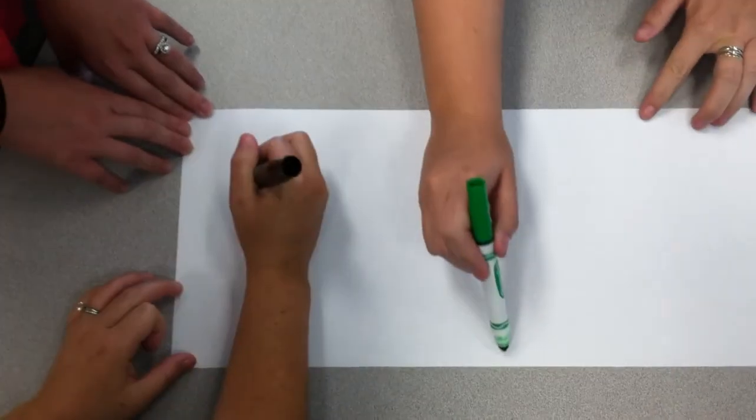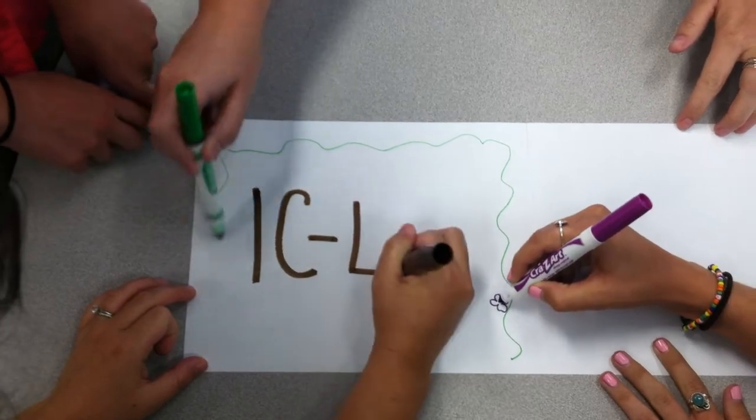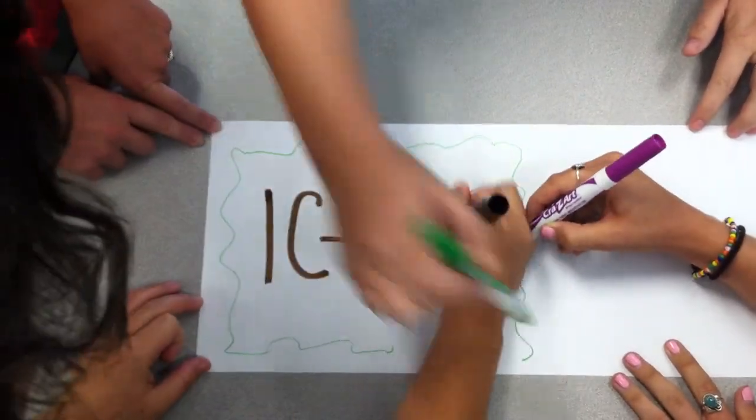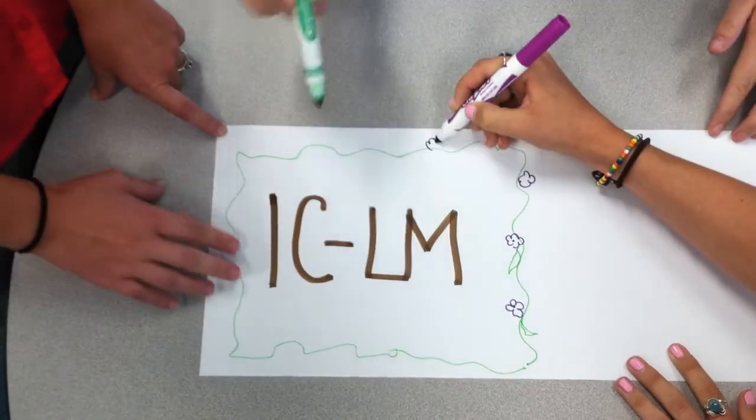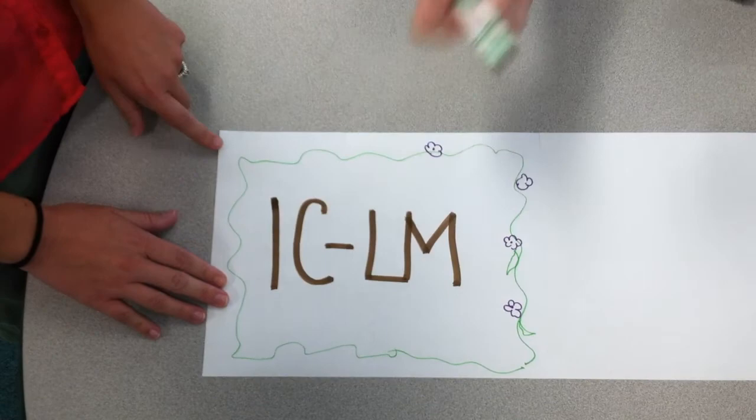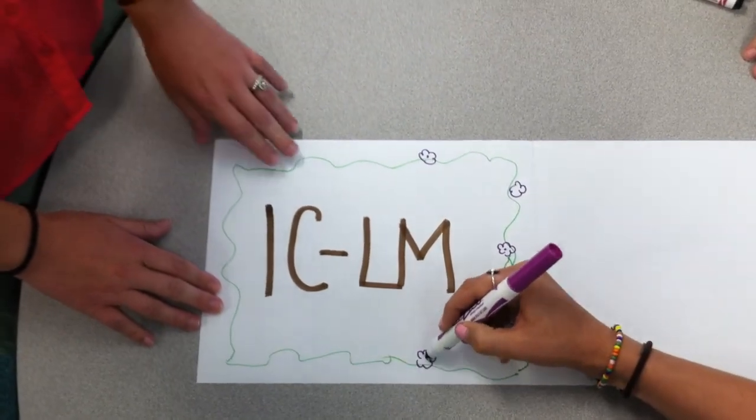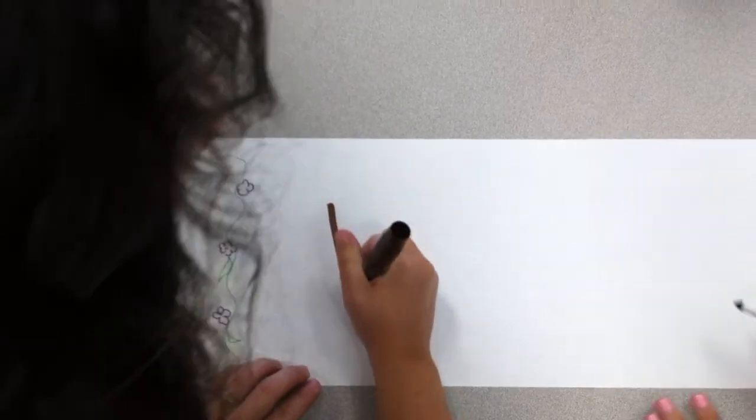The newest kindergarten through fifth grade elementary Academy for JCS is located in La Mesa. We are the Innovation Center La Mesa with an emphasis in the performing arts, and currently at our site we are fully at capacity in each grade level.